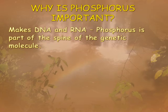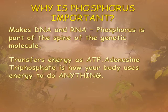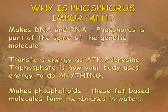So why is phosphorus important? Well, it's part of DNA and RNA — it is part of the spine of the genetic molecule, the sugar phosphate chain. It also transfers energy in the body of all living creatures: adenosine triphosphate is how your body uses energy to do anything. And it also makes phospholipids, which are the fat-based molecules that form the membranes of all your cells. So phosphorus is really a very important element for life.